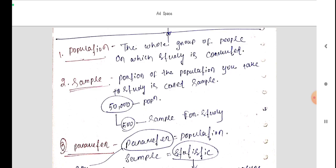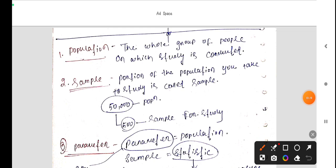Next is important terms in statistics. These are all the terms in statistics. What is population? Population is the whole group of people on which study is conducted.